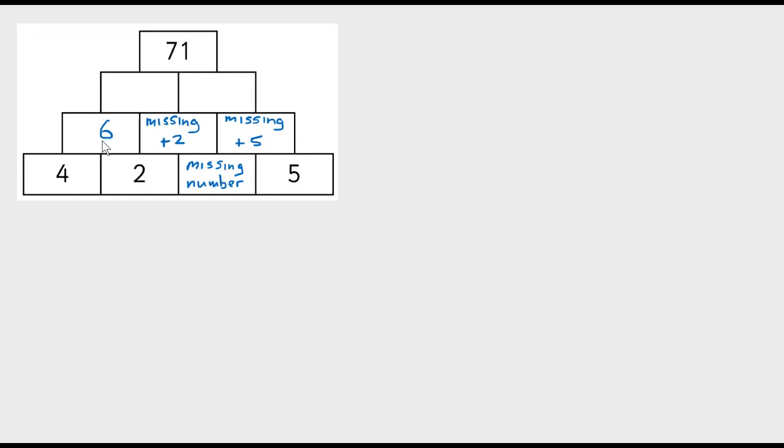The next row up: 6 plus my missing number plus 2, well 6 plus 2 makes 8, and my missing number as well means it's my missing number plus 6 plus 2, which makes 8.